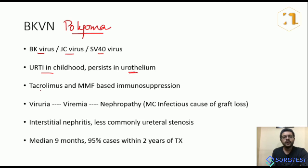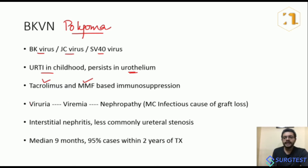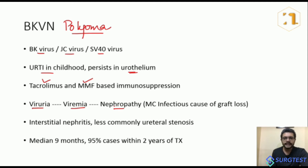With the advent of more potent immunosuppressive therapy — mainly tacrolimus and mycophenolate mofetil — the incidence of BK virus nephropathy has been increasing over the last 25 years. There is a sequence of events to remember: first the patient develops viruria (virus in the urine), then viremia (virus in the plasma), and then nephropathy. When it causes nephropathy, it leads to graft loss in about 50% of cases. BK virus is the most common infectious cause of chronic allograft loss.